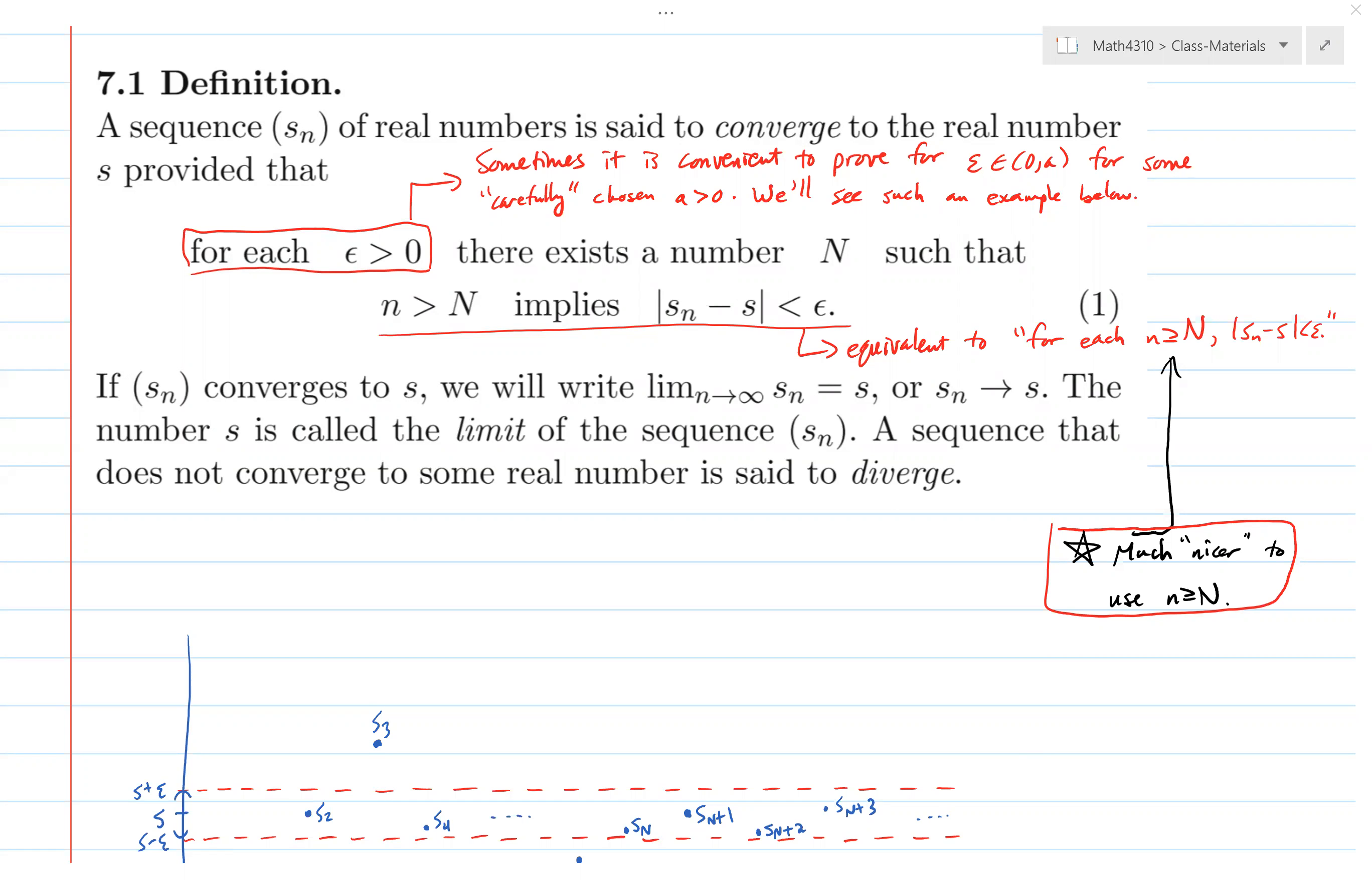We're going to quickly review the main points from the first week. Everything was revolving around the convergence of a sequence of real numbers. We had this definition, which you should have annotated as you see on the screen here. In particular, we pointed out how you might want to restrict epsilon values to be kind of small.